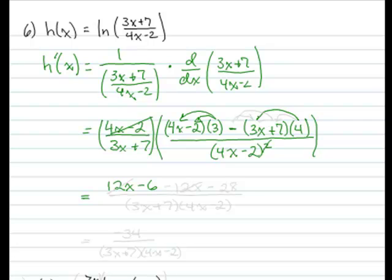So we distribute the 3. So we have 12x minus 6. And I distribute the 4 as well as the negative sign. So 4 times 3x is 12x. Times a negative is a negative 12x. 4 times 7 is 28. And times a negative is a negative 28. All over 3x plus 7 times 4x minus 2.